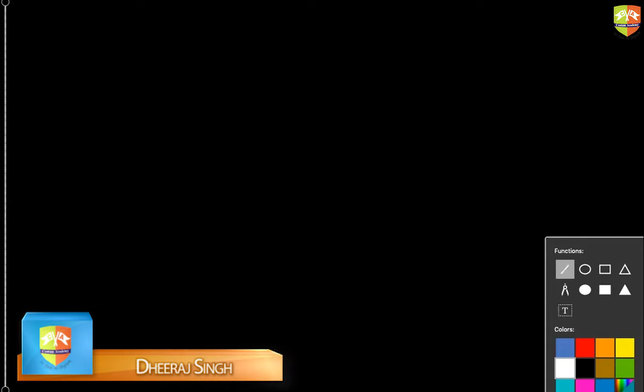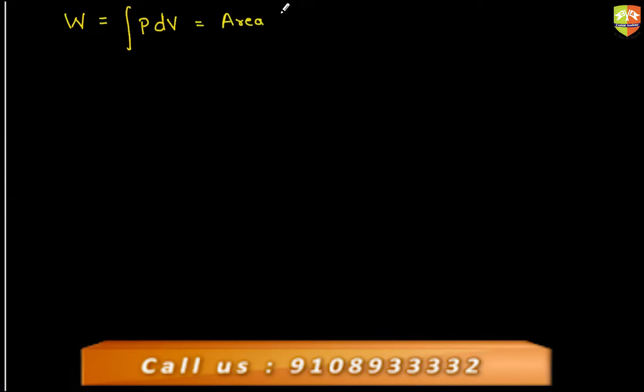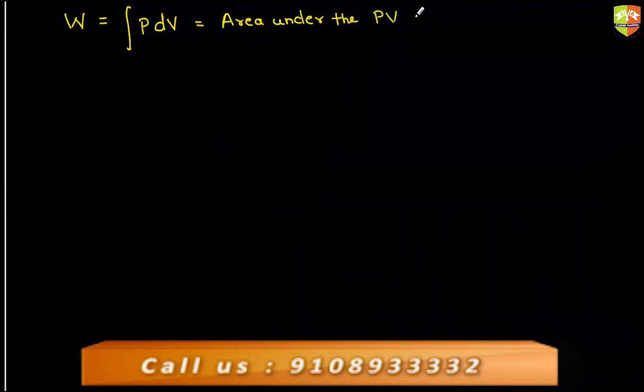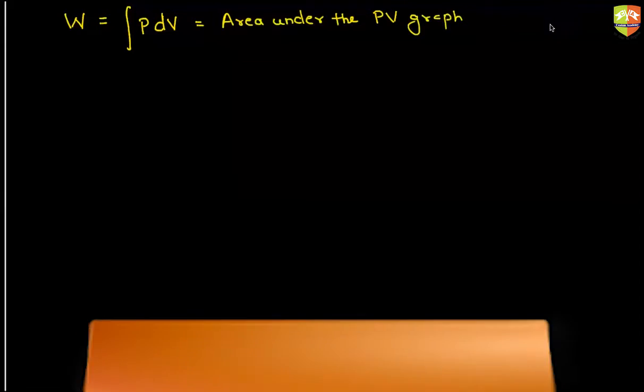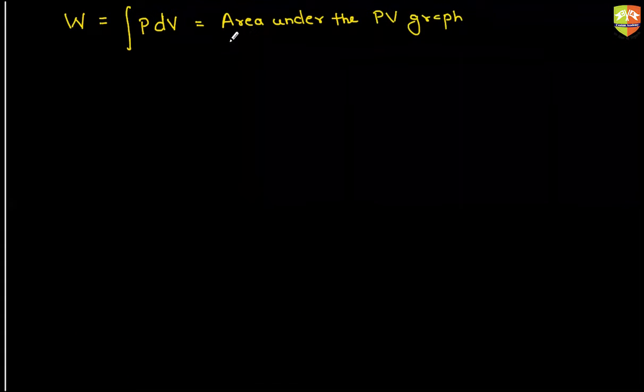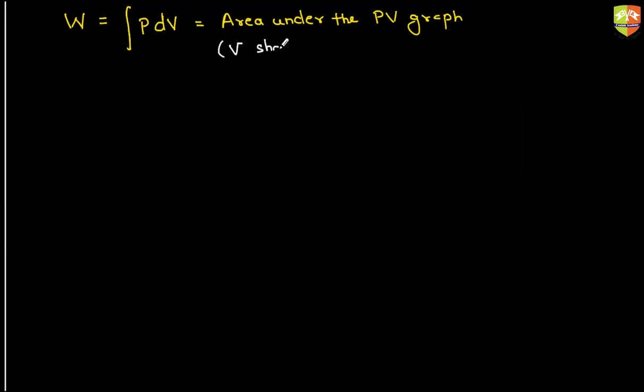Now one small thing that I forgot to mention: the formula for work done for the ideal gas is integral PdV, and this formula tells you nothing but that this is an area under the PV graph.